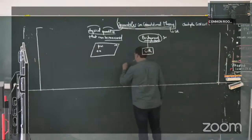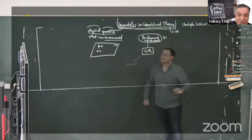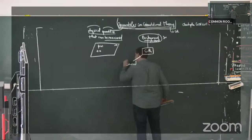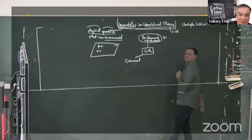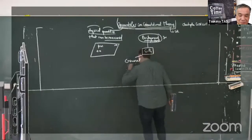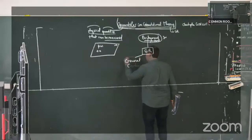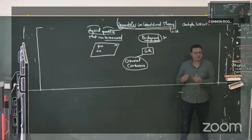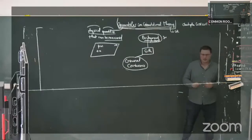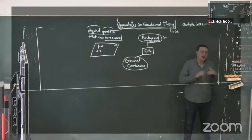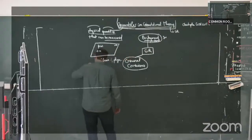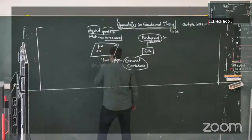The second point, which is really important, is general covariance. Covariance is a principle saying that the laws of physics must be independent of the coordinate system used to describe them. In general relativity, they must be independent under any choice of reference frame. So the laws of physics do not depend on the frame of reference — whether polar coordinates or Cartesian coordinates. We don't expect the laws of physics to depend on the coordinates you choose on spacetime to describe them.